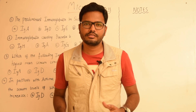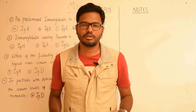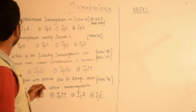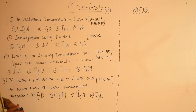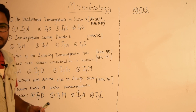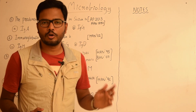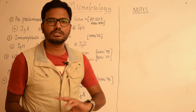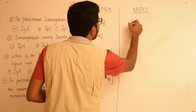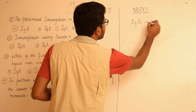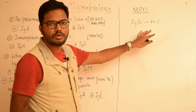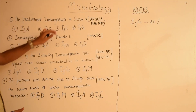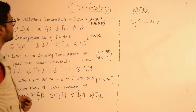In this video, let's discuss a few multiple choice questions in microbiology. Starting with the first question: the predominant immunoglobulin in saliva — IgA, IgD, IgE, or IgG? We have four types of immunoglobulins chiefly, and the major serum immunoglobulin present is IgG, which accounts for 80% of all immunoglobulins. However, the predominant immunoglobulin in saliva is IgA.